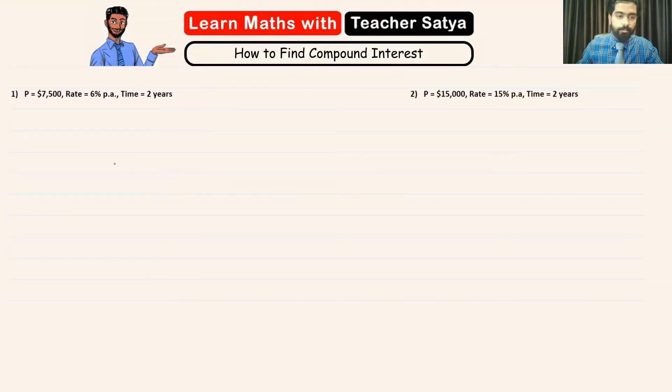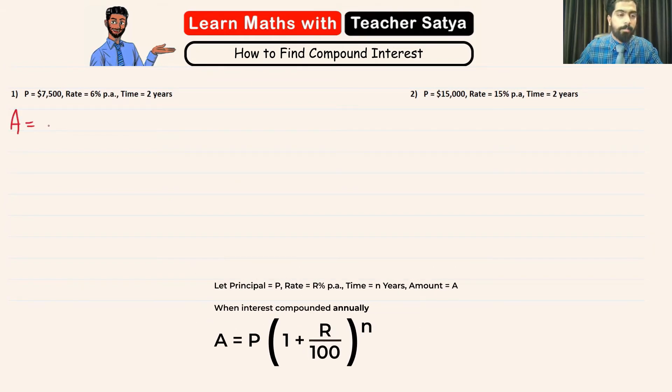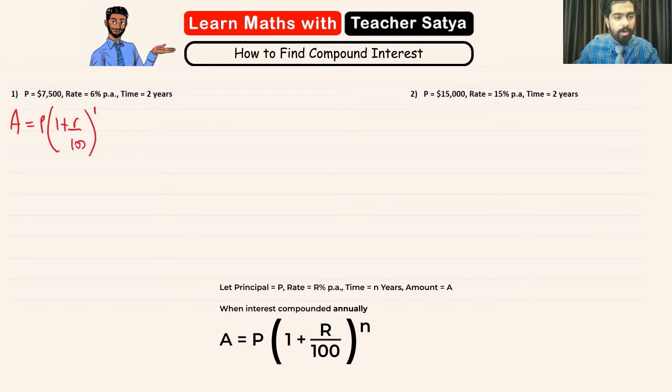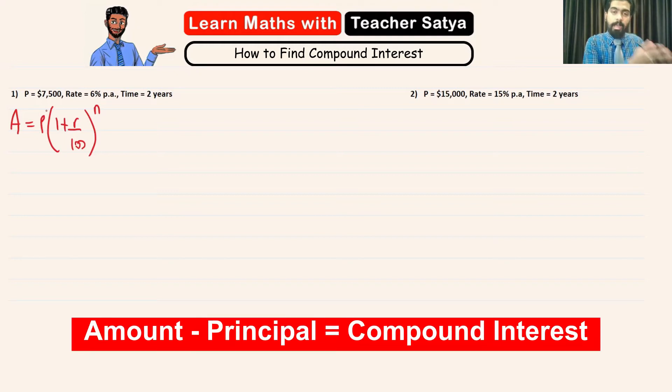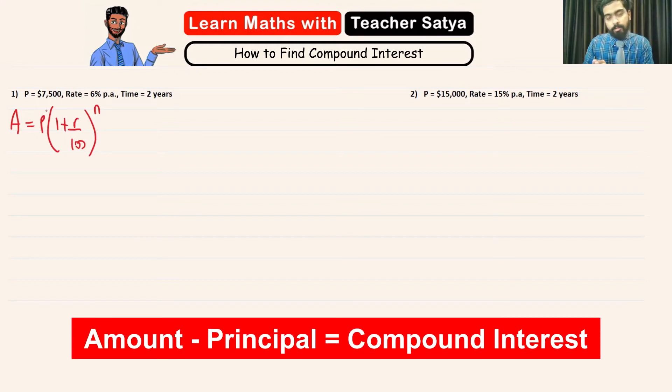Now, first of all, what we'll be doing is we'll be writing down the formula. So, we know the amount formula in compound interest is P times 1 plus R over 100 to the power of n. Now, you guys might be thinking that why are we using the amount formula? So, once we find the amount, we will take the amount and subtract with the principle to get our compound interest.